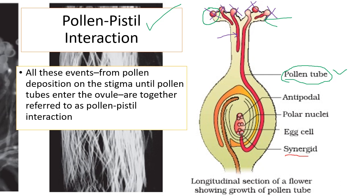The synergids play a very important role here. The synergids are present at the micropylar end and consist of specialized thickenings called the filiform apparatus. The filiform apparatus guides the entry of the pollen tube into the synergids — that is, into the female gametophyte — and once inside, the pollen tube slowly releases the two male gametes.